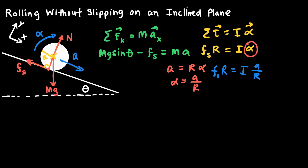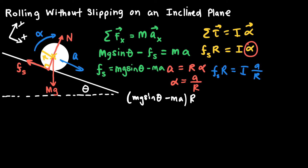Next, I'll solve the translational equation for the static friction force: Fs equals mg sine theta minus MA. Then I substitute that expression into the rotational equation. Combining those two equations gives: mg sine theta minus MA, times R, equals the moment of inertia times A over R.